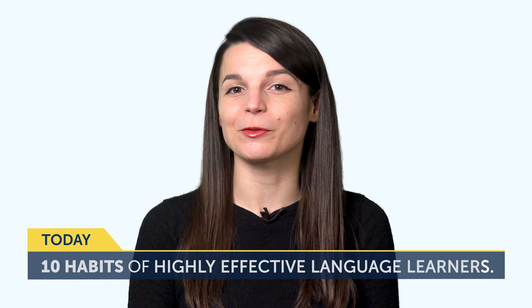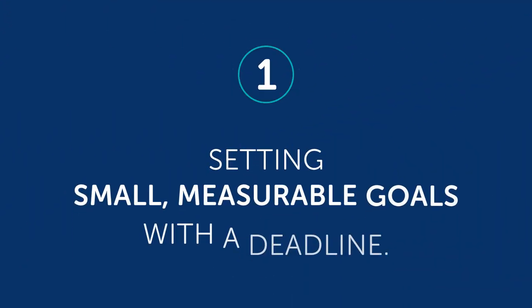10 Habits of Highly Effective Language Learners. If you walk away from this lesson and remember only one habit, let it be this one. Habit number one, setting small, measurable goals with a deadline. For example, do 30 of our language lessons by the end of this month. 30 is small. You're not learning the whole language here. It's measurable. Either you did 28 or you hit 30. And you know when to reach it by, which gives you motivation. Let's expand on this point even further. You should also set goals for every study session. For example, if your goal is to do 30 lessons in a month, and if a month has 30 days, you know you need to do one lesson a day.